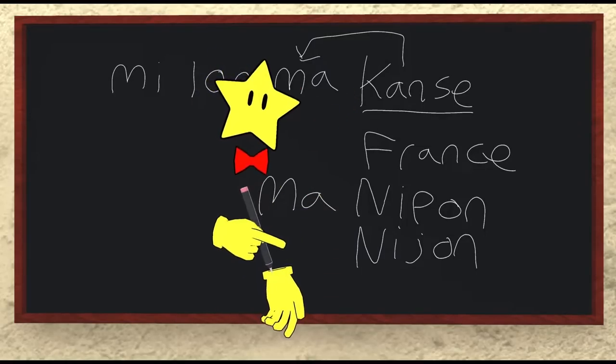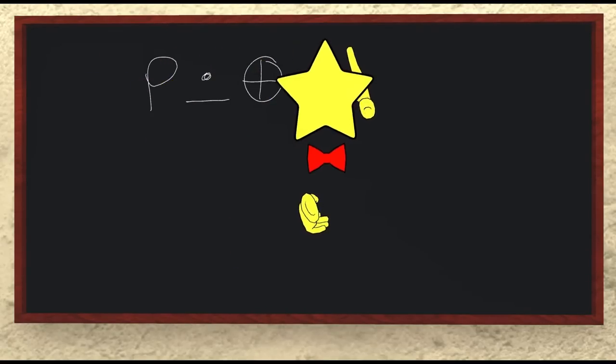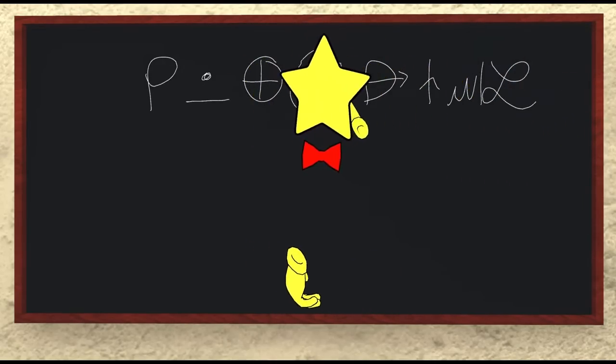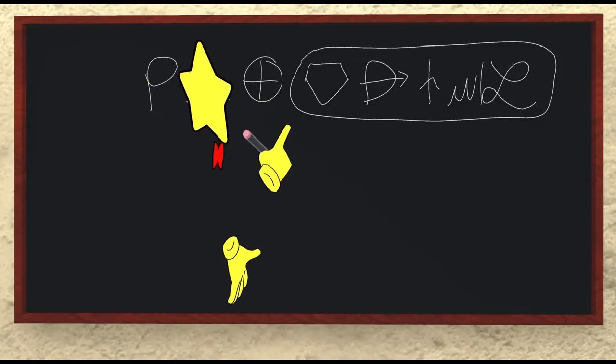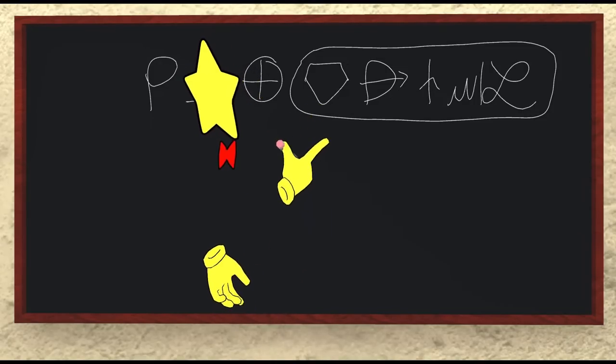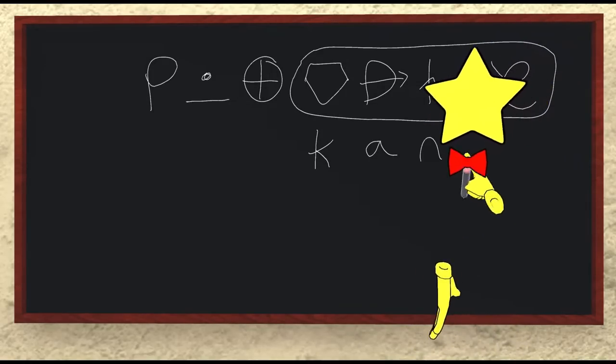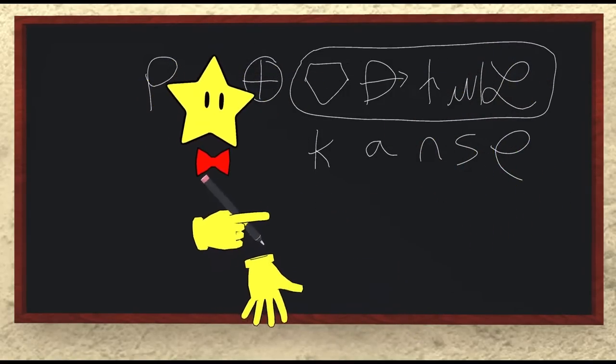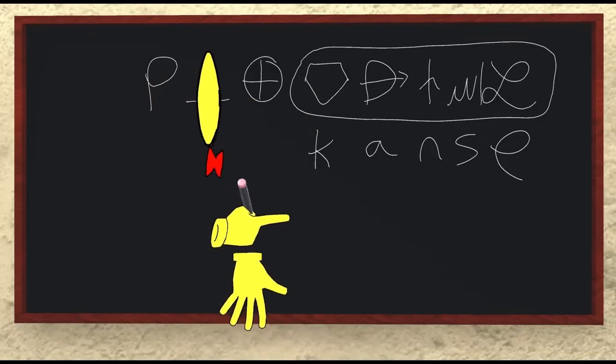Now, we've seen this system in sitelen Lasina, but what if you wanted to write in sitelen Pona? Well, let's start with mi lon ma, and then give me just a moment to write out all these bits. Here we go. Now, what's going on here? Well, this big box drawn around all these different symbols is called a cartouche. And when you have one of these, it means that all the words inside it are read by their first letter. Let's go through them. Here we have kiwen, so that's K. There's alasa, which is A. Nasin, which is N. Sewi, S. And esun, E. So this is one way you can spell KANSE using sitelen Pona.